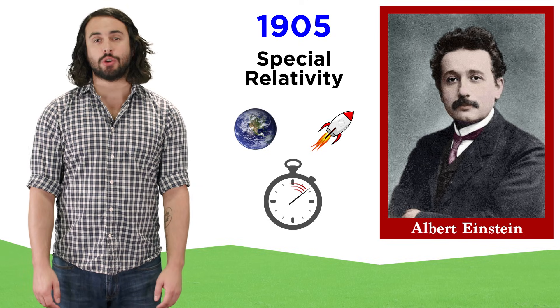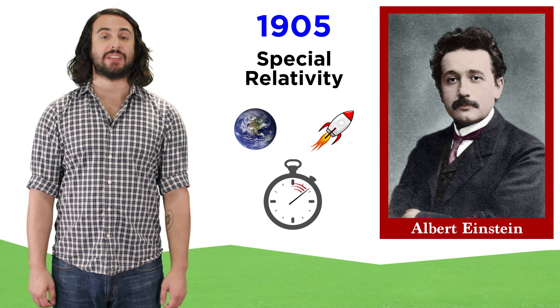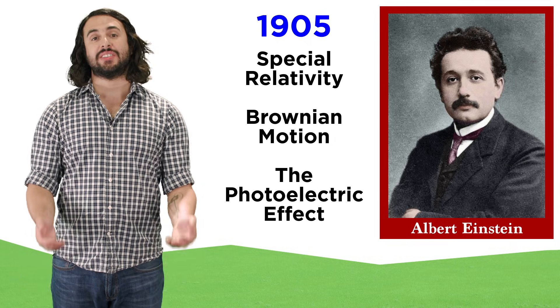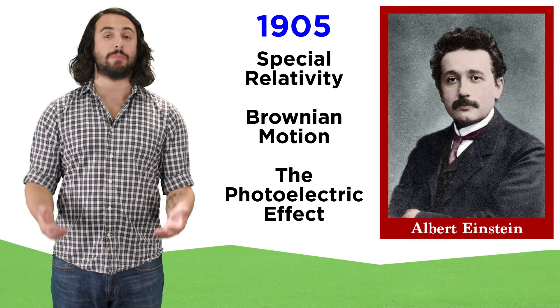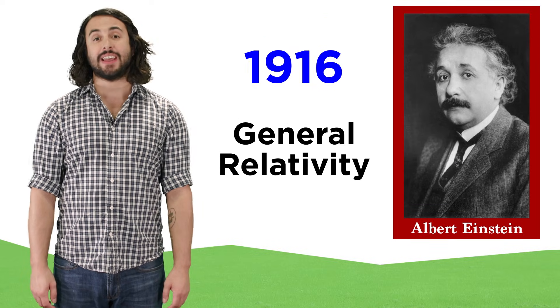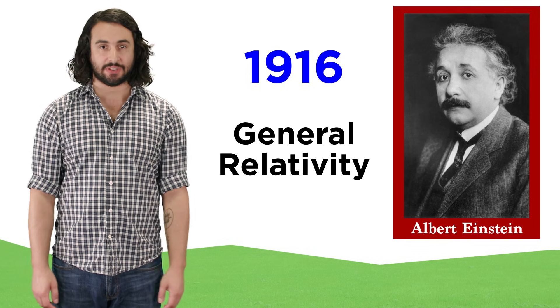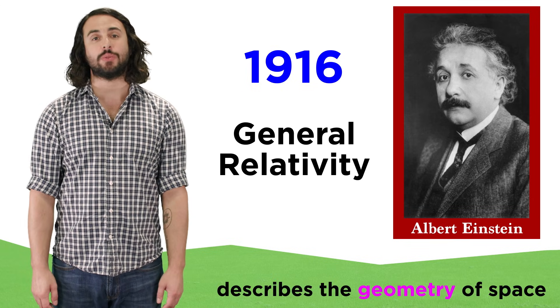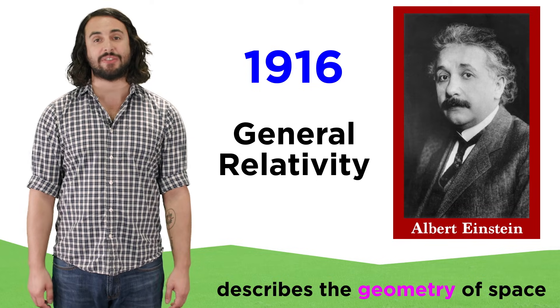We just spent a good amount of time learning Einstein's theory of special relativity, which he developed in 1905. This and other publications of that year put him on the map as a force to be reckoned with. A decade later, in 1916, he published his general theory of relativity, which described the geometry of space itself and revolutionized the way we think of the gravitational force.